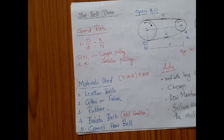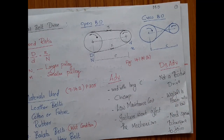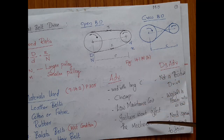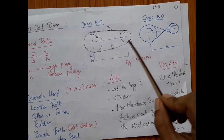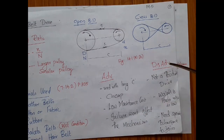Now let us discuss the advantages and disadvantages of belt drives. Belt drives are used when the center distance is very high — that is, if the center distance between the two shafts is on the order of a few meters. They are very cheap and require less maintenance cost. Another important advantage is that if a failure happens during working, it will not affect any of the mechanisms associated with the larger or smaller pulley.